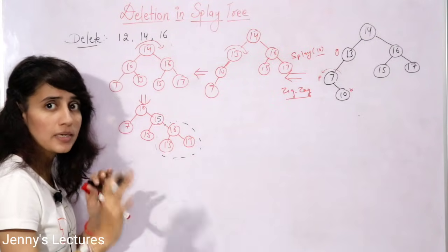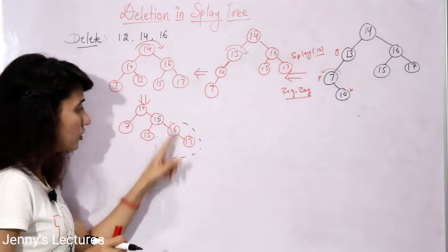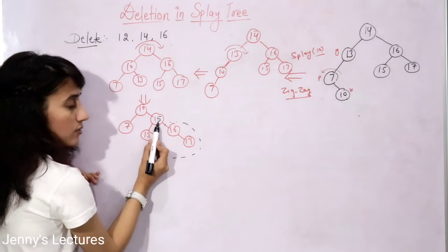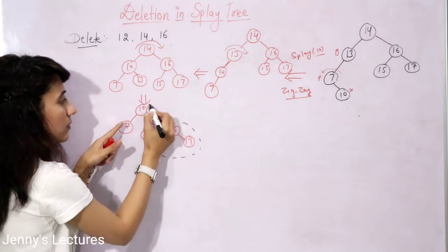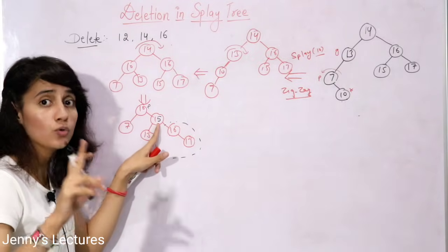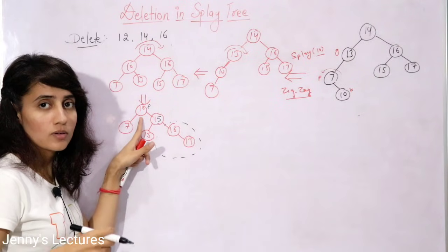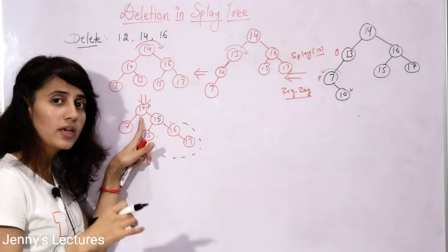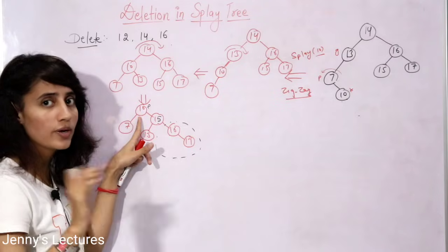We recursively call the delete function on the inorder successor node. Since that node is a leaf, we simply delete it. Now we perform the splaying operation. Before deletion, the parent of node 14 was 10, which is the root. Since the parent is already the root, no splaying is needed — the node to splay is already the root.